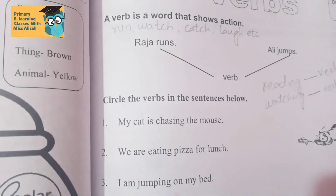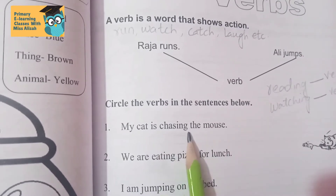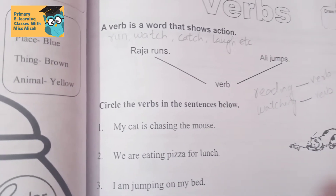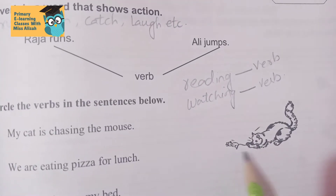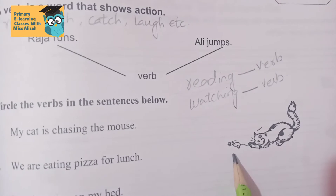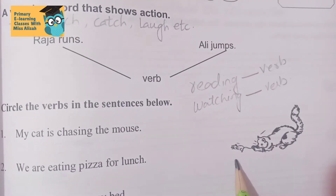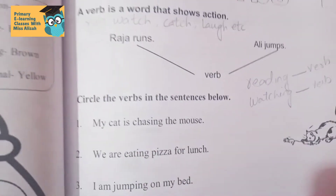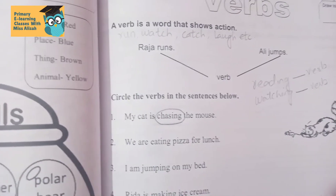The first sentence is: My cat is chasing the mouse. Chasing ka matlab hota hai peeche daurna. Like as we can see in this picture, there is a cat and a mouse, and the cat is chasing the mouse. Kya kar rahi hai cat? Chase kar rahi hai mouse ko. Toh is mein action kya hua? Obviously chasing. Toh humne circle kar diya chasing ko.